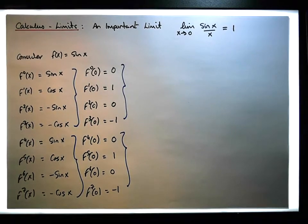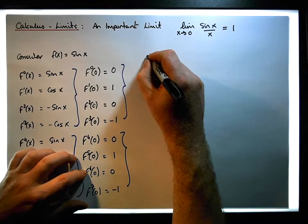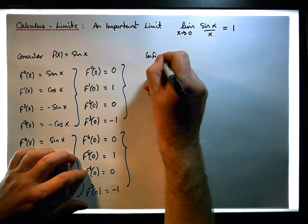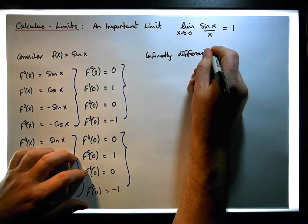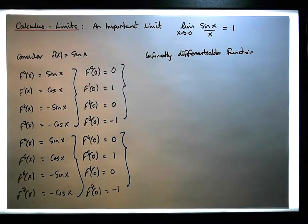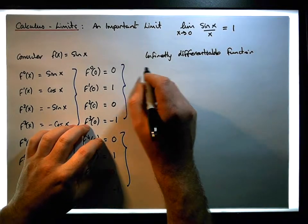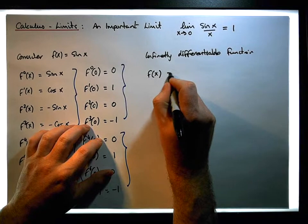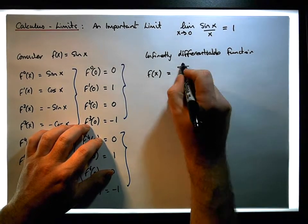So what does the Taylor series tell us? For an infinitely differentiable function, we can expand the function as a summation. Specifically, f of x is equal to an infinite sum from n equals 0 to infinity.